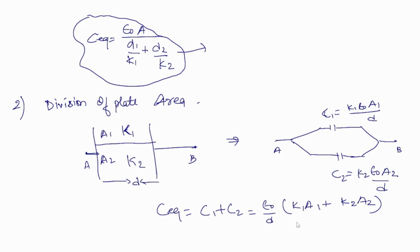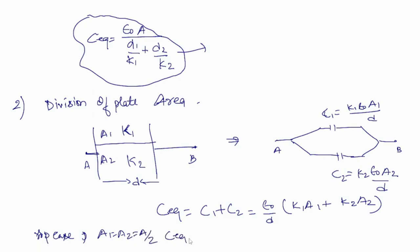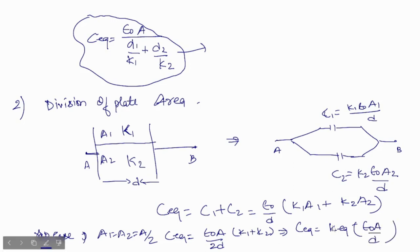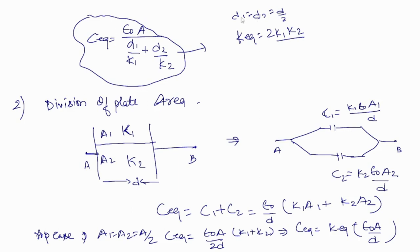For special cases: if A1 = A2 = A/2, then C_eq = (ε₀A / 2D) × (k1 + k2), meaning K_equivalent = (k1 + k2)/2, which is the arithmetic mean of k1 and k2. Similarly, for the plate separation case with d1 = d2 = d/2, K_equivalent = 2k1k2 / (k1 + k2), which is the harmonic mean of k1 and k2.